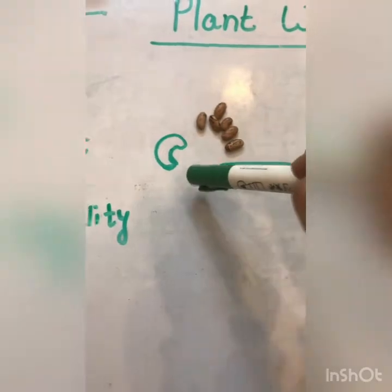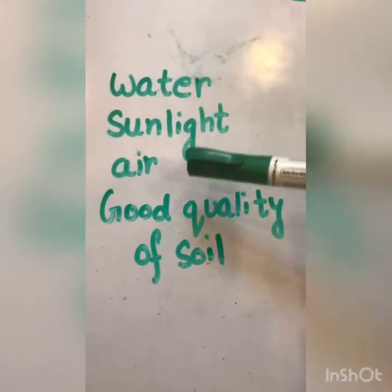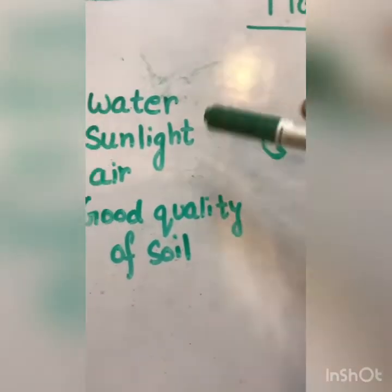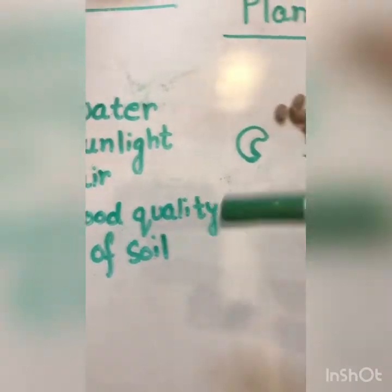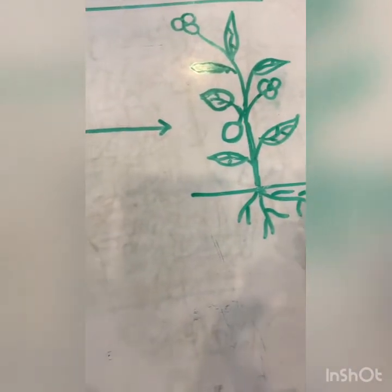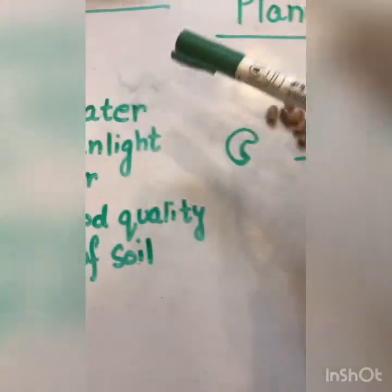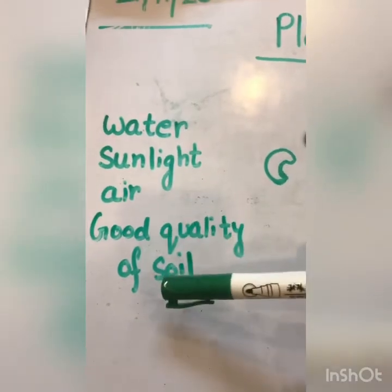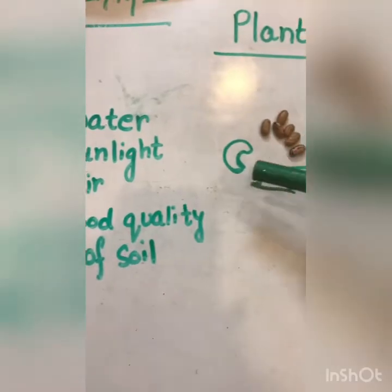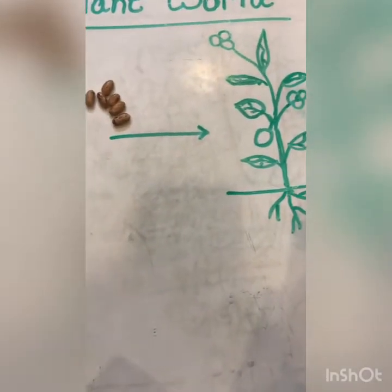So this tiny seed needs water, sunlight, air and good quality of soil. Do you know this tiny seed needs all these to grow into a new plant? These all play a very important role for such a tiny seed to grow into a new plant.